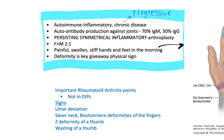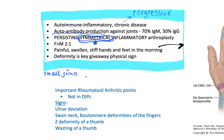There is autoantibody production against the joints, and these can be detected on lab values. It's a persisting symmetrical inflammatory arthropathy. The key word here is symmetrical — this will be very crucial later on when differentiating rheumatoid arthritis from osteoarthritis. Rheumatoid arthritis affects the small peripheral joints in a symmetrical way, and that is a key giveaway.